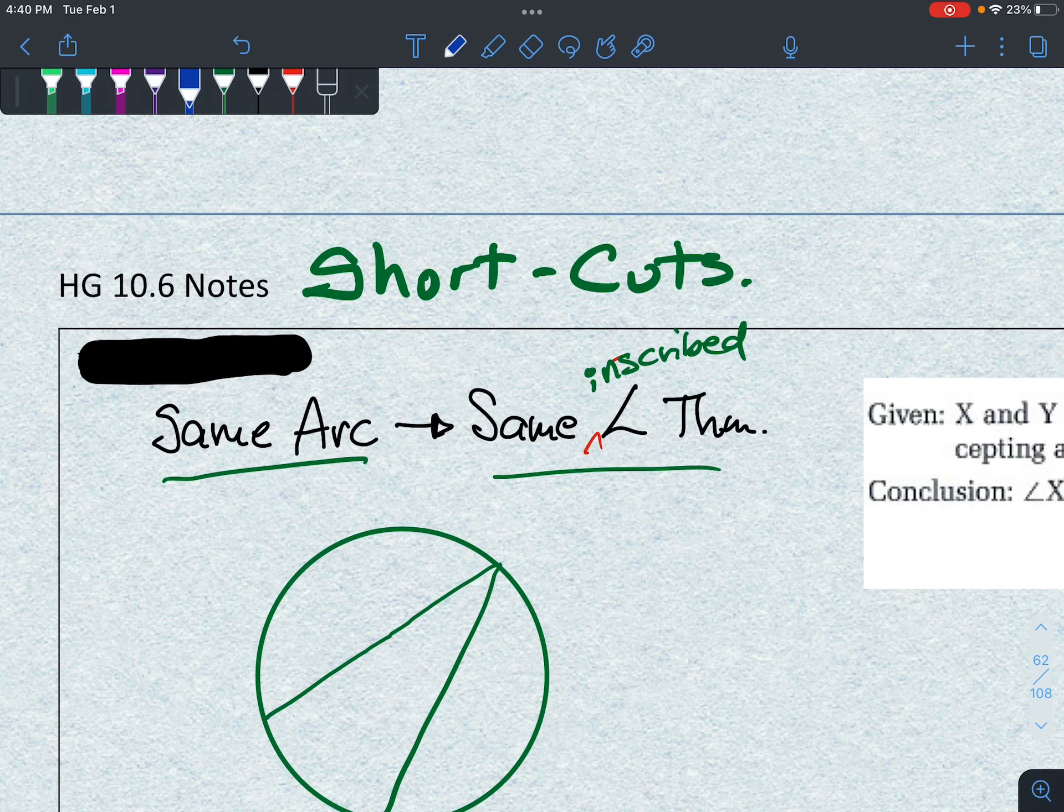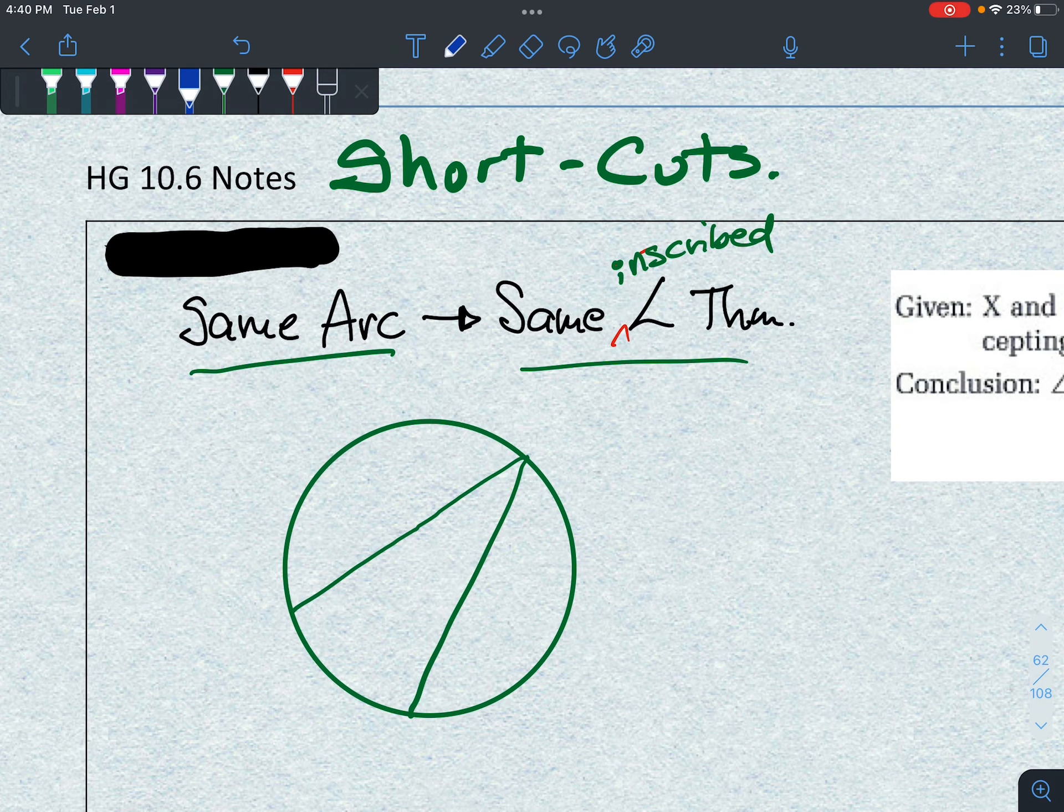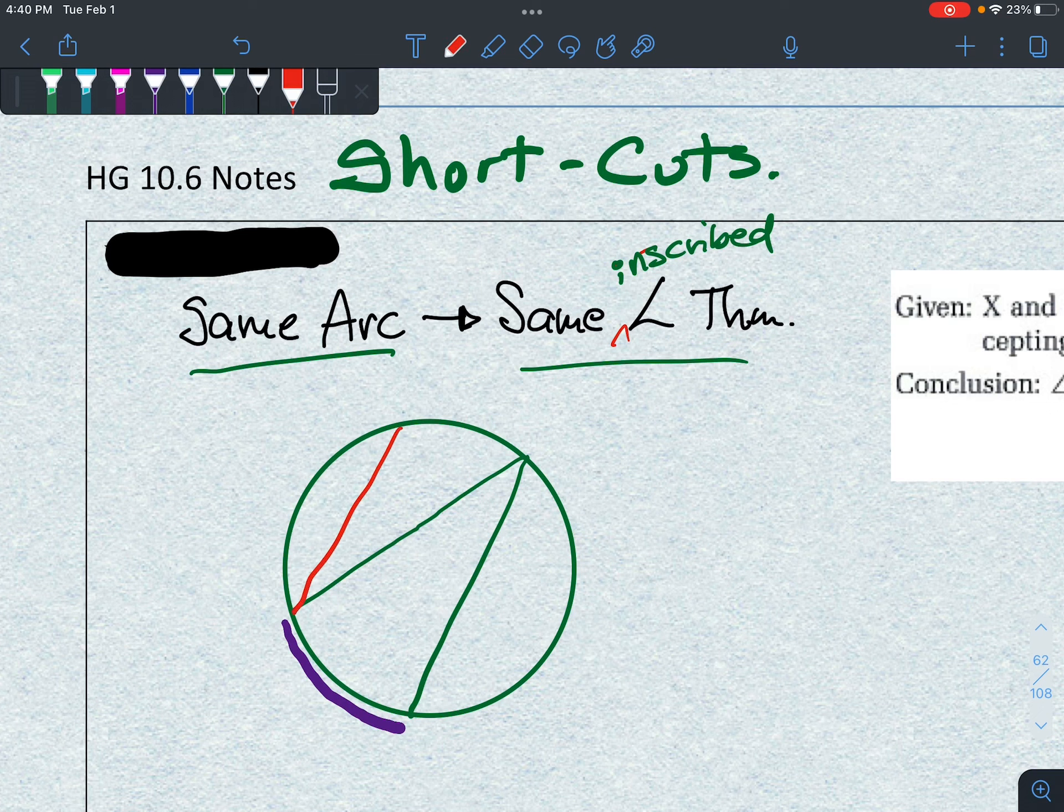If you have the same arc, so let me highlight here in the diagram, there's the arc. It's inscribed, or I should say it's intercepted by two, use two different colors here, by two other inscribed angles.